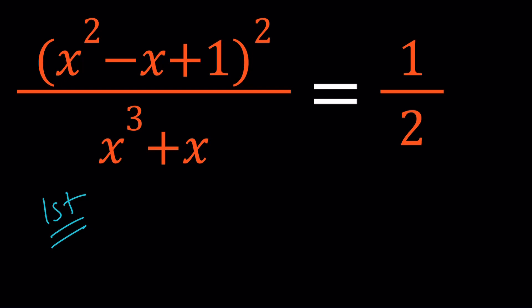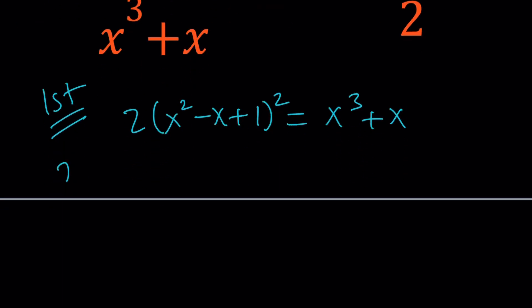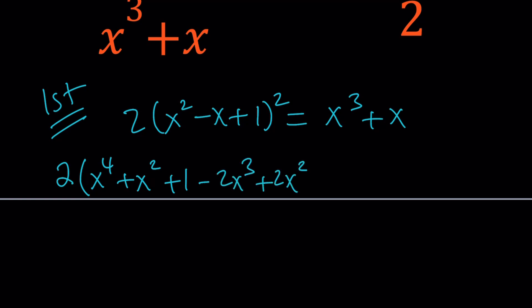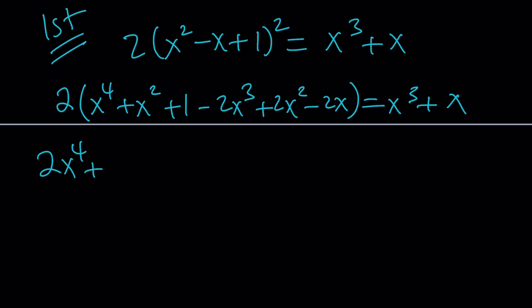For my first method, I'm going to go ahead and cross multiply. Now let's go ahead and expand the perfect square. We can use the formula for a plus b plus c squared. Then distribute the 2.